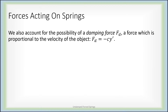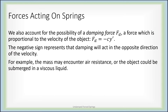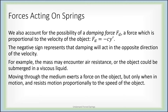We're also going to account for the possibility of a damping force Fd. A damping force is proportional to the velocity of the object and in the opposite direction, so Fd is negative some constant c times the velocity y prime. The negative sign represents the fact that damping is in the opposite direction of the velocity. For example, suppose your mass encounters air resistance or it's submerged in some viscous liquid that resists motion — whichever direction the object is moving, the damping force pushes against that, proportional to the speed.